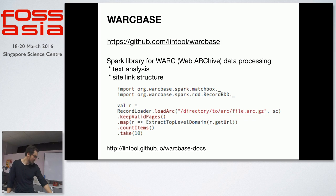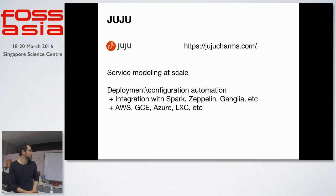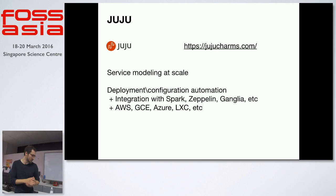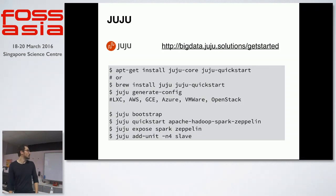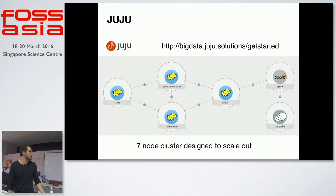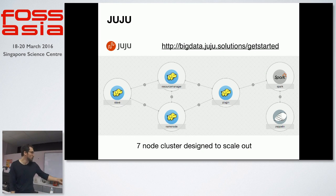One more tool is Juju by the folks at Canonical — they call it 'service modeling at scale,' but it's essentially a deployment and configuration automation tool that integrates with the whole ecosystem. With about seven lines of shell you can get the tool deployed on a seven-node cluster with a distributed file system, resource manager, Spark, and Zeppelin on top of it.